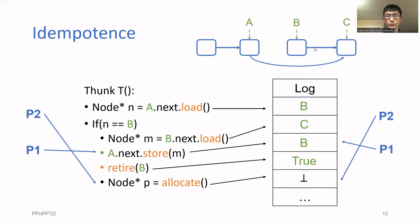So that's the high-level algorithm. You can make any thunk idempotent by just replacing all the shared memory operations with these variants that commit to the log.